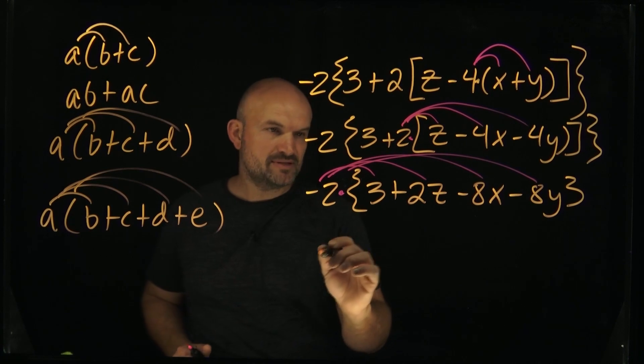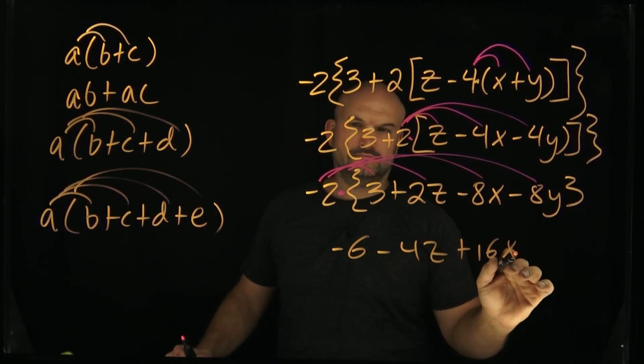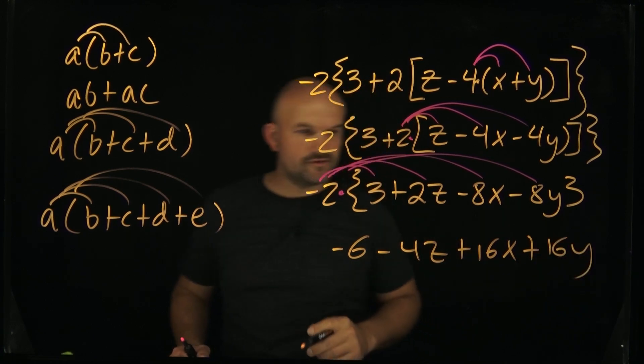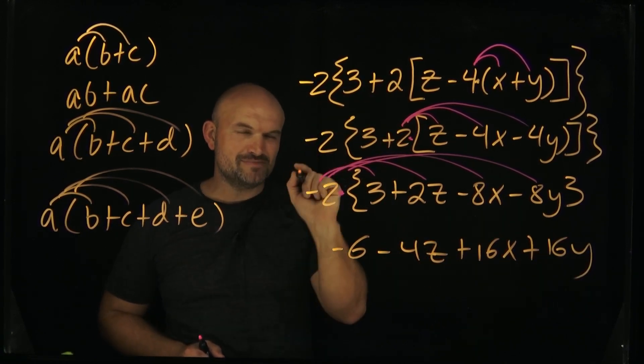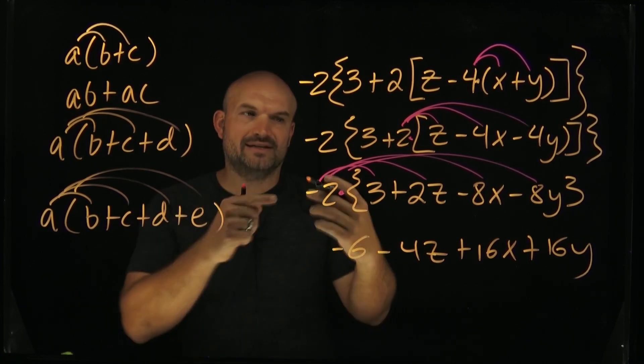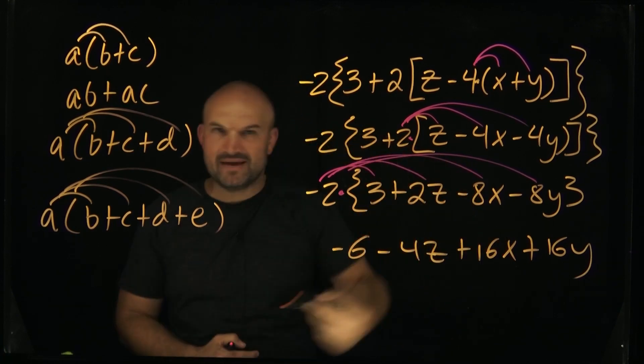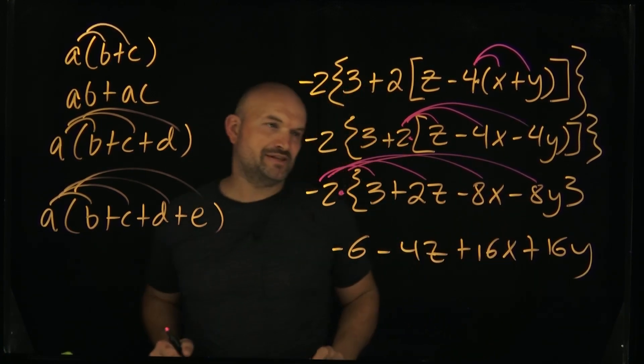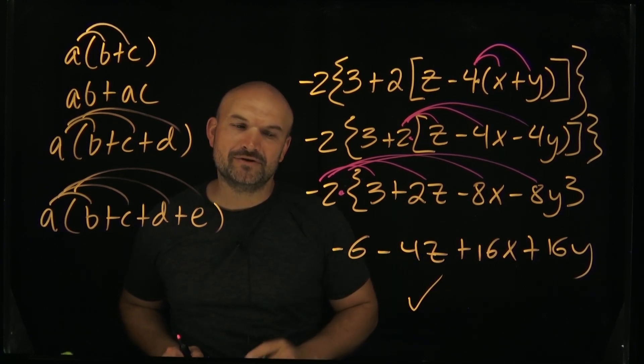So now we can go ahead and wrap up this problem and simplify it. I'll just double check again. I think everything else worked out good. Just be careful when you have this negative to make sure that, sometimes I like to say it out loud, like negative two times three, negative two times two, negative two times negative eight, just to make sure that I'm keeping these signs. But it looks like I did everything correct. So hopefully this video was helpful for you. And if it was, you're going to love the next video I have for you.